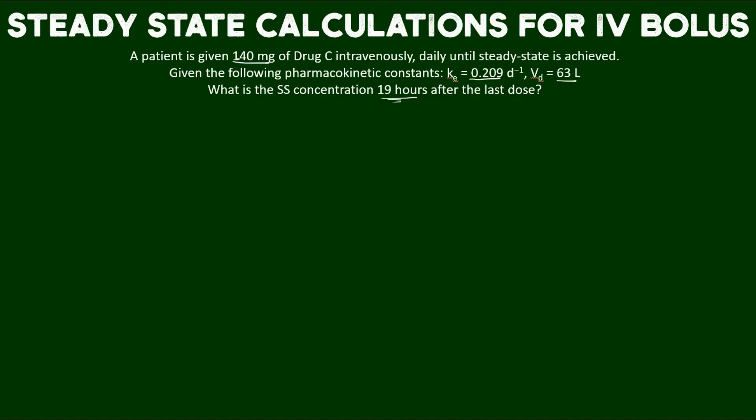What is the equation we use in this scenario, an IV bolus scenario at steady state? It looks like this: dose over volume of distribution multiplied by e to the minus k_e times t, over 1 minus e to the negative k_e times tau, which is the dosing interval.